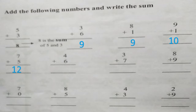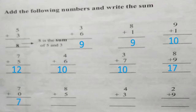Next, four plus six is ten. Three plus seven is ten. Eight plus nine is seventeen. Seven plus zero is seven. Eight plus five is thirteen. Four plus three is seven. Two plus nine is eleven.